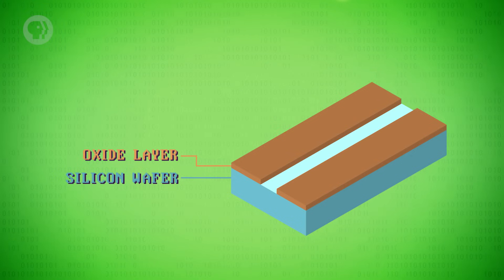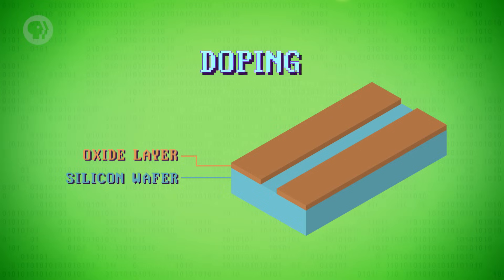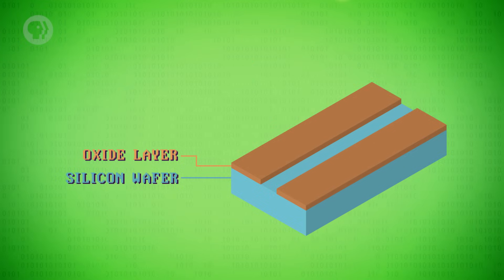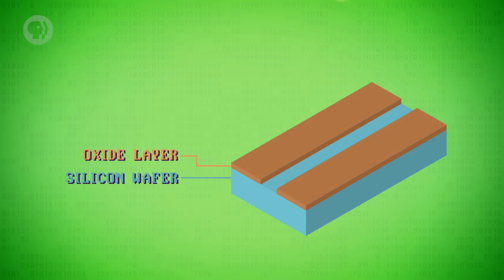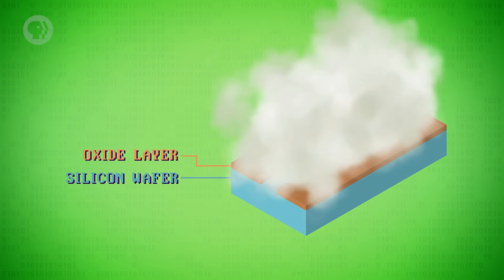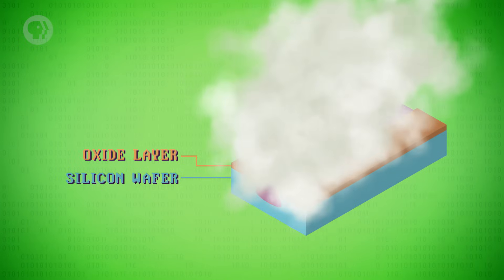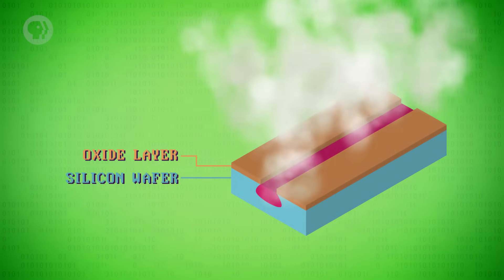Now we can see the silicon again. We want to modify only the exposed areas to better conduct electricity. To do that, we need to change it chemically through a process called doping. Most often, this is done with a high-temperature gas, something like phosphorus, which penetrates into the exposed area of silicon and alters its electrical properties. We're not going to wade into the physics and chemistry of semiconductors, but if you're interested, there's a link in the description to an excellent video by Derek Muller from Veritasium.